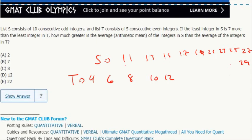So, S is 10 consecutive odd integers. I just made up numbers starting at 11, and then the least integer in S is 7 more than the least integer in T, so that means the least integer in T then has to be 4, and T is 4 or 5 consecutive even integers.